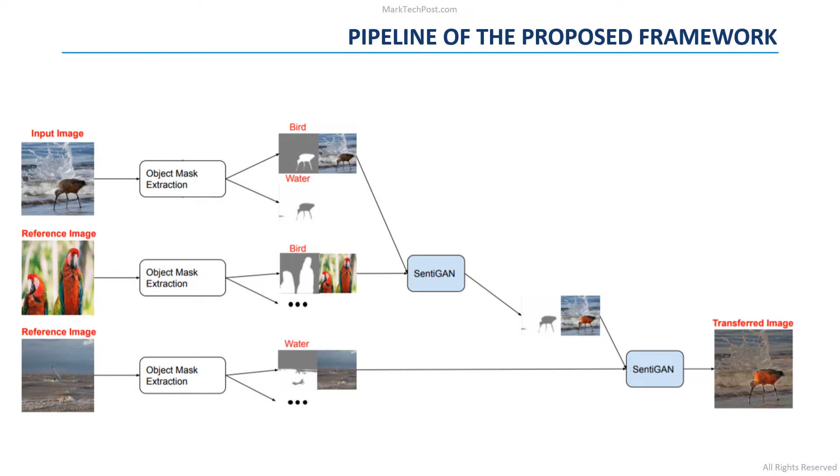For the core object level sentiment transfer, the researchers propose a sentiment-aware GAN called SentiGAN, that we are going to describe in the following slides. Now, let's see in detail how the proposed sentiment-aware GAN works. Given an input image, SentiGAN uses a content encoder and a style encoder to decompose an image into a content code and a style code.